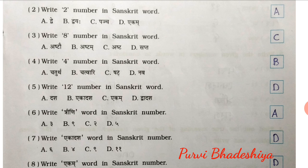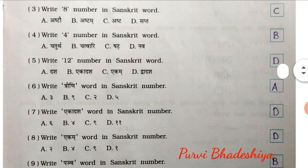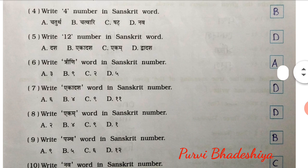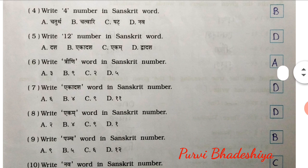3rd: Write 8 number in Sanskrit word. So the answer is C — Stuck. Next: Write 4 number in Sanskrit word. So the answer is B — Chetwari.